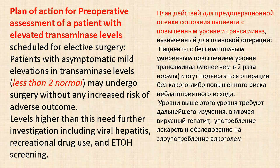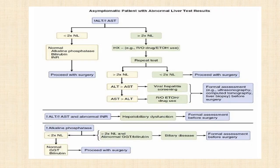The plan of action for preoperative assessment of patients with elevated transaminase levels: consider shutting out elective surgery. Patients with asymptomatic mild elevation in transaminase levels less than twice normal may undergo surgery without any increased risk of adverse outcome. Levels higher than this need further investigation, including viral hepatitis and recreational drug use, to evaluate asymptomatic patients with abnormal liver test results.